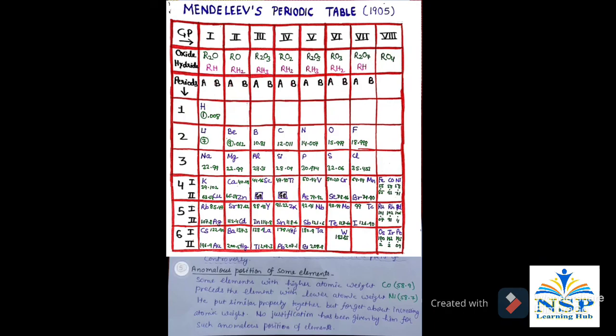Number 5: Anomalous position of some elements. Some elements with higher atomic weight, such as copper, precede the element with lower atomic weight, nickel. He put similar properties together, but forgot about increasing atomic weight. No justification has been given by him for such anomalous position of the elements.